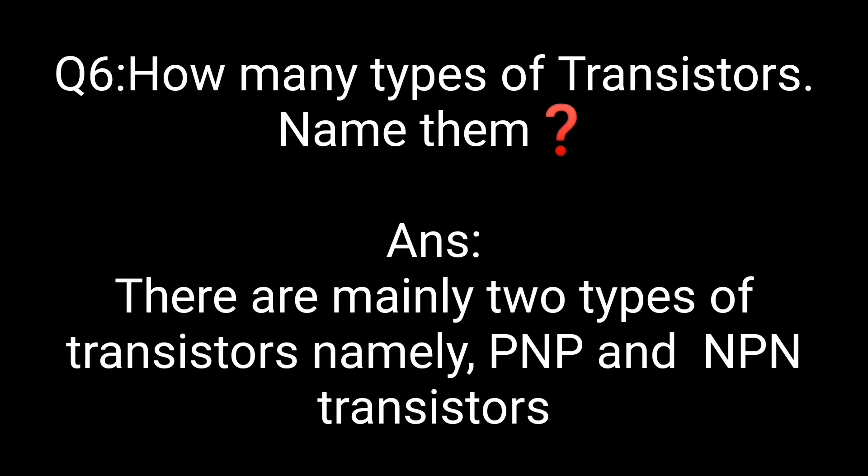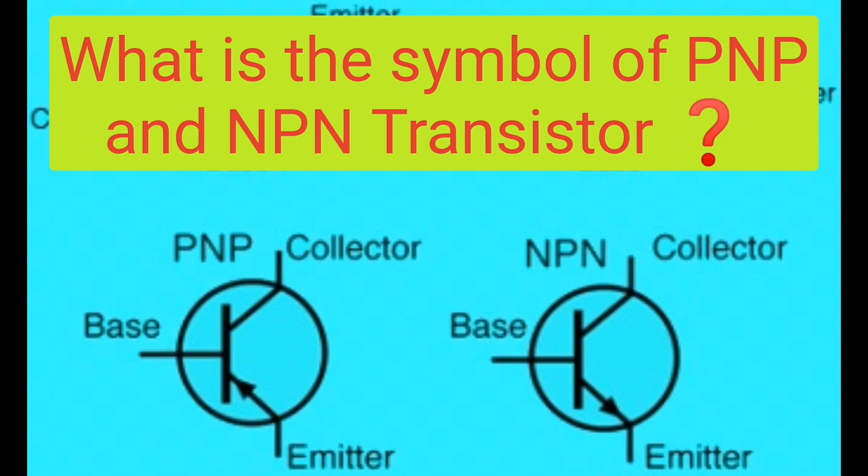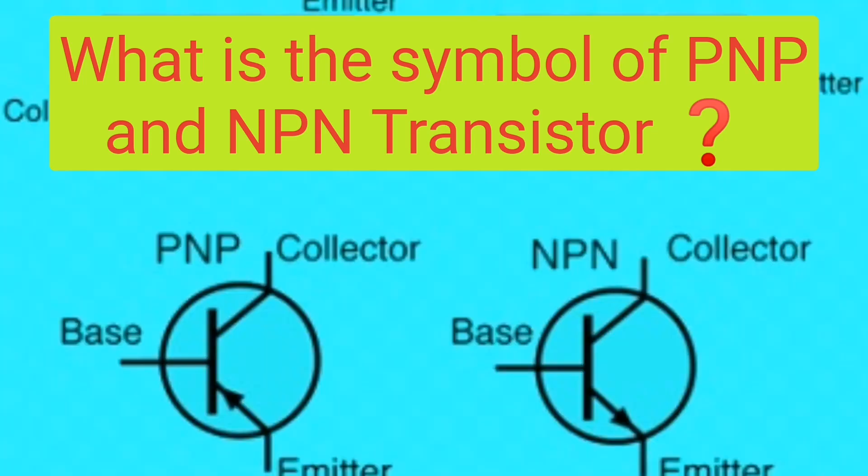How many types of transistors are there? Name them. There are mainly two types of transistors named PNP and NPN transistors. What is the symbol of PNP and NPN transistor? The symbol is shown in this picture.